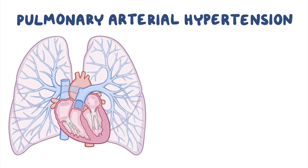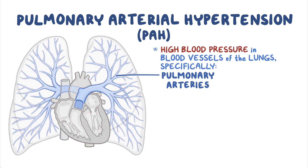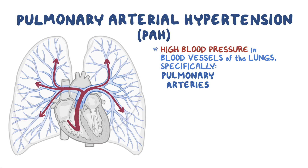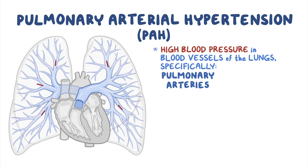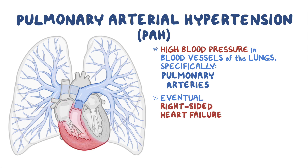Pulmonary arterial hypertension, or PAH, is a rare disorder characterized by high blood pressure in the blood vessels of the lungs, specifically the pulmonary arteries. The pulmonary arteries are blood vessels that carry blood from the right side of the heart through the lungs. So when pulmonary arterial pressure rises, blood backs up into the right side of the heart, eventually leading to right-sided heart failure.